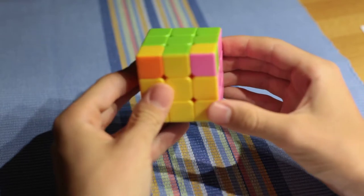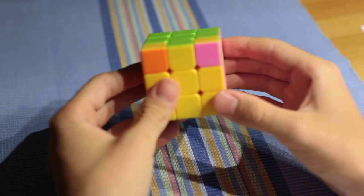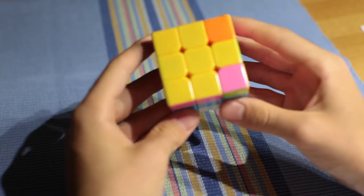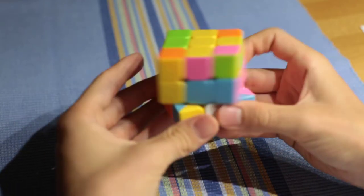If you twist exactly one middle piece a quarter turn, you can create a parity. Two edge pieces are exchanged and two corner pieces are exchanged.